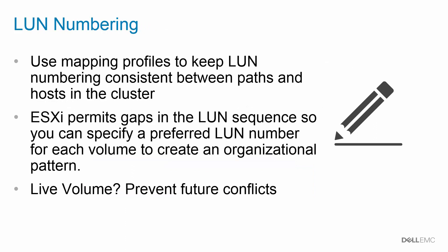The next best practice is LUN numbering. Use the built-in mapping profiles in the SC series to keep the LUN numbering consistent between paths and hosts in the cluster. This keeps everything organized. One of the benefits of ESXi is that it permits gaps in the LUN sequence, which allows you to create an organizational pattern. For example, LUNs 10 through 20 are application servers, LUNs 21 through 30 are database servers, and so on.